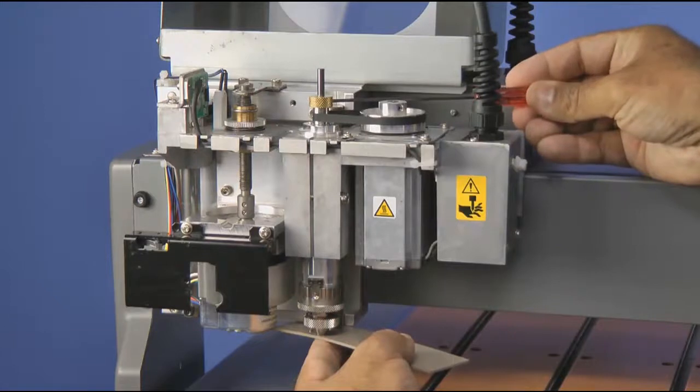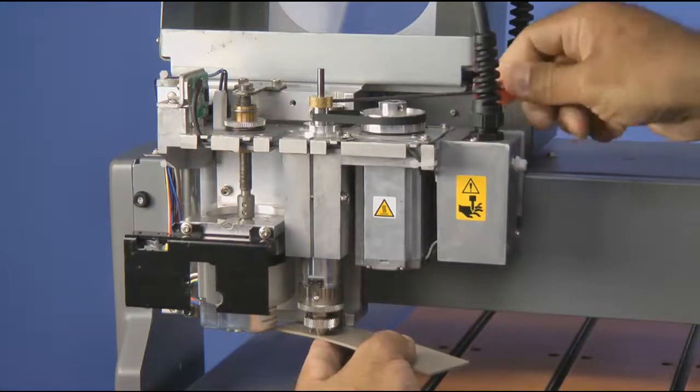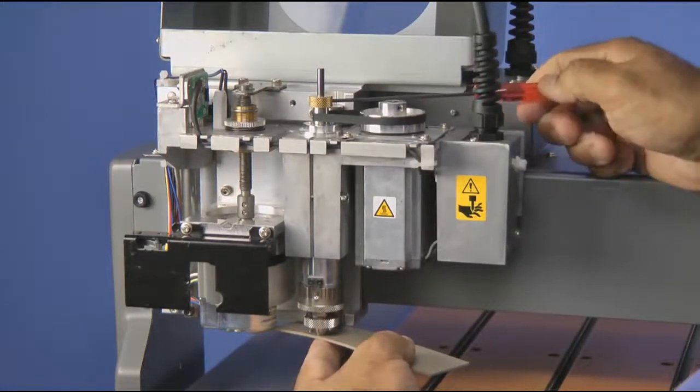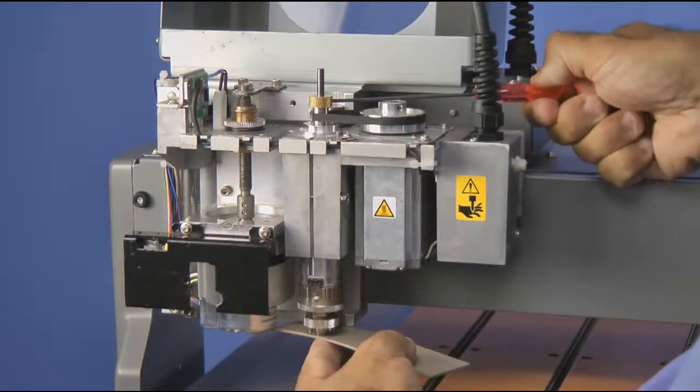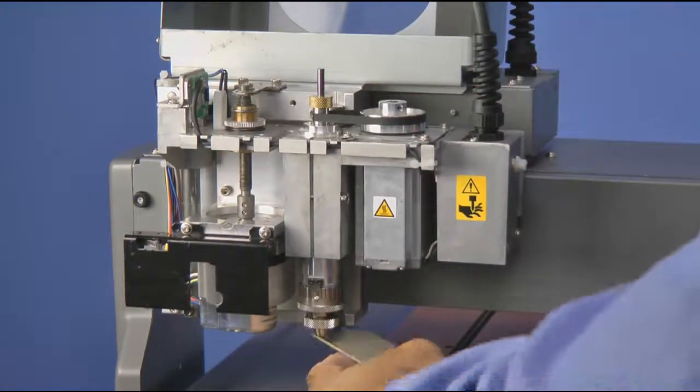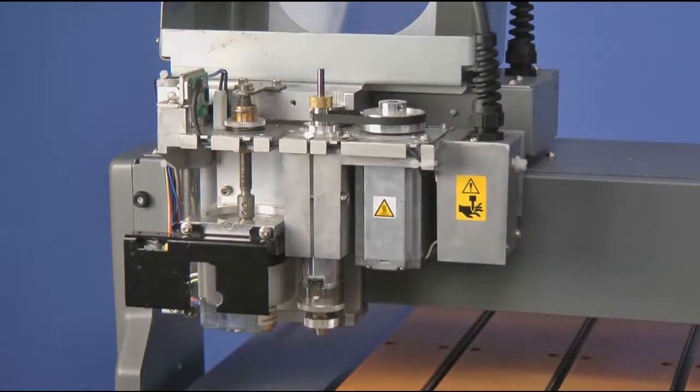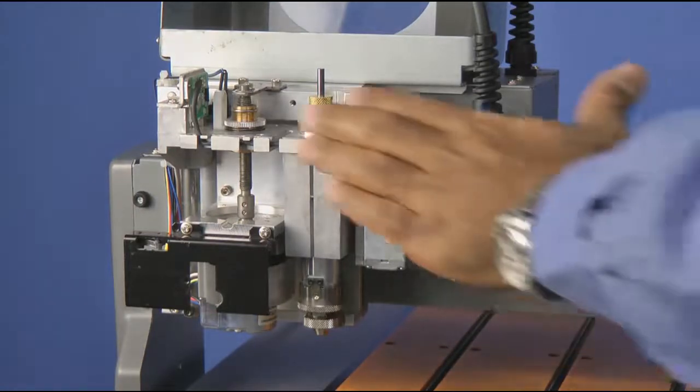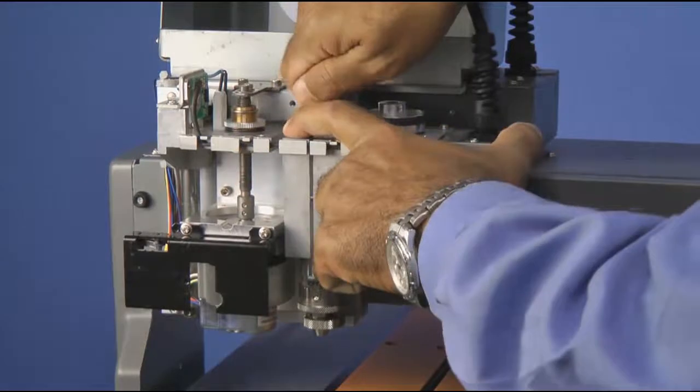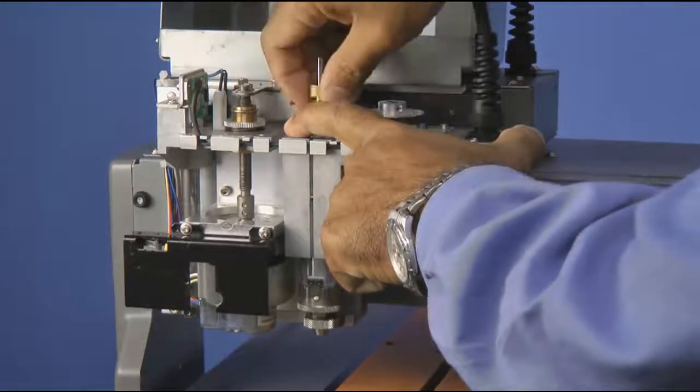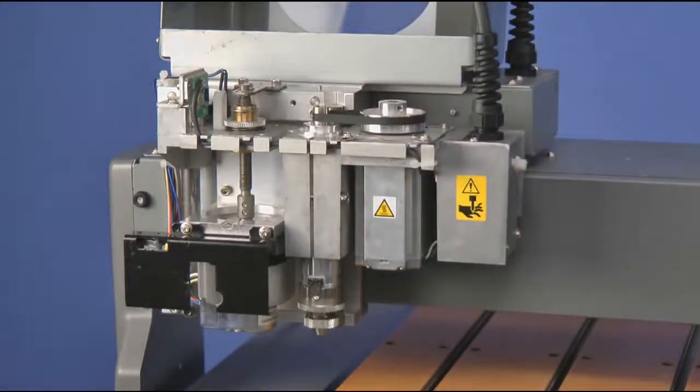Once it is flush, we will tighten down the hex screw on the brass cutter knob. Once this is done, we can remove the character cutter and set it aside.